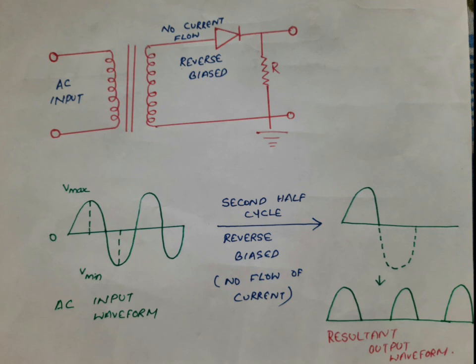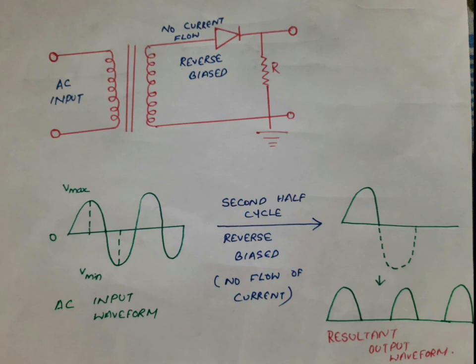In the resultant output waveform you can see that the positive half cycle is shown as a solid line, whereas the negative half cycle is shown as a dotted graph. That means we are unable to convert the negative half cycle into direct current. Only the positive waveforms are converted into direct current, and that is why there is a gap between the positive half cycles. This is how half wave rectification takes place — using a single diode, only the positive half cycle is converted into direct current.